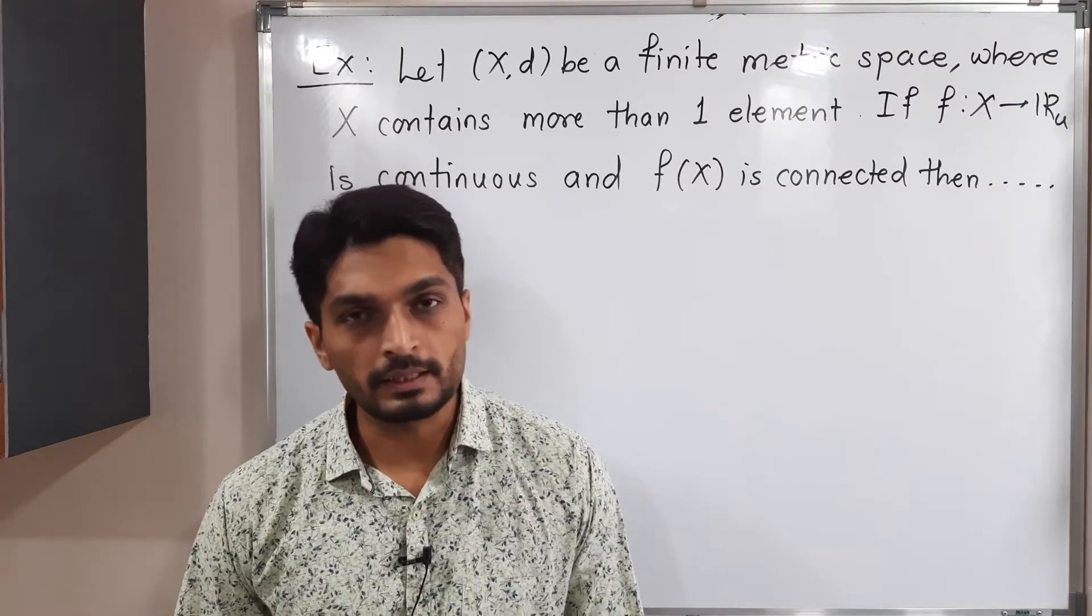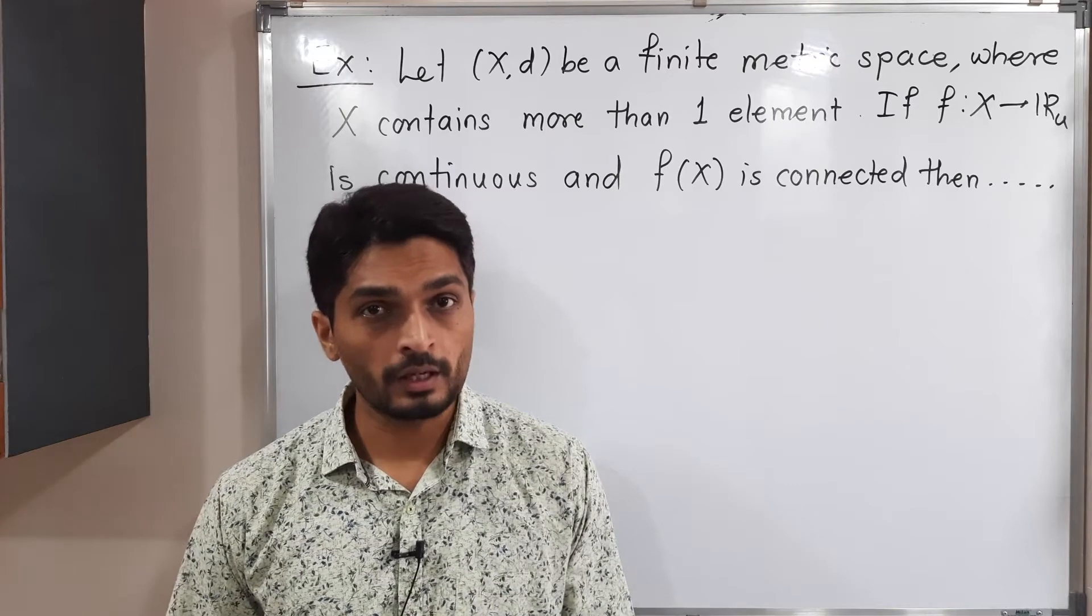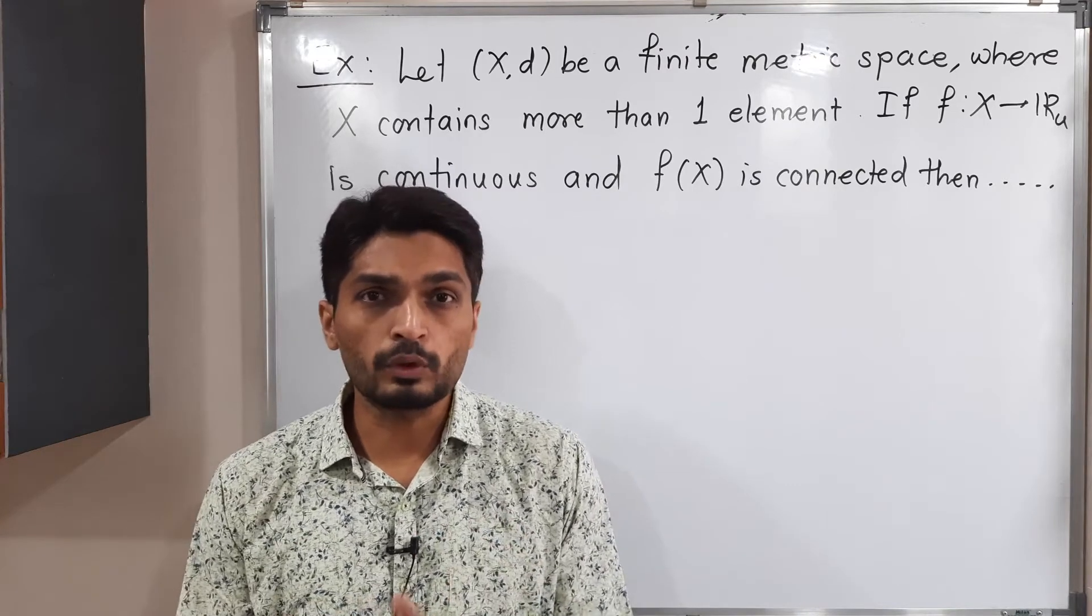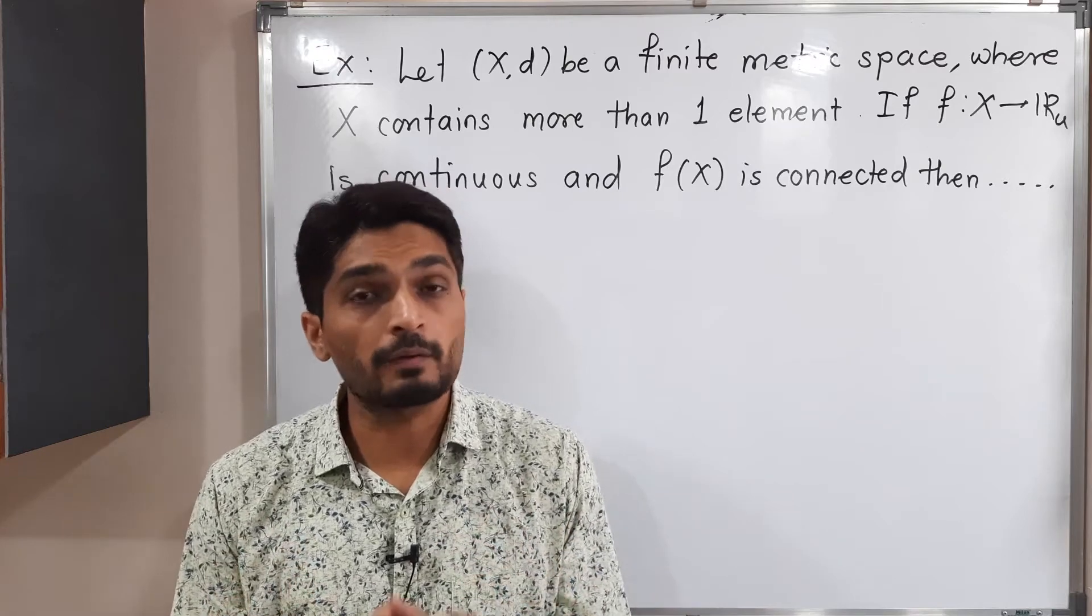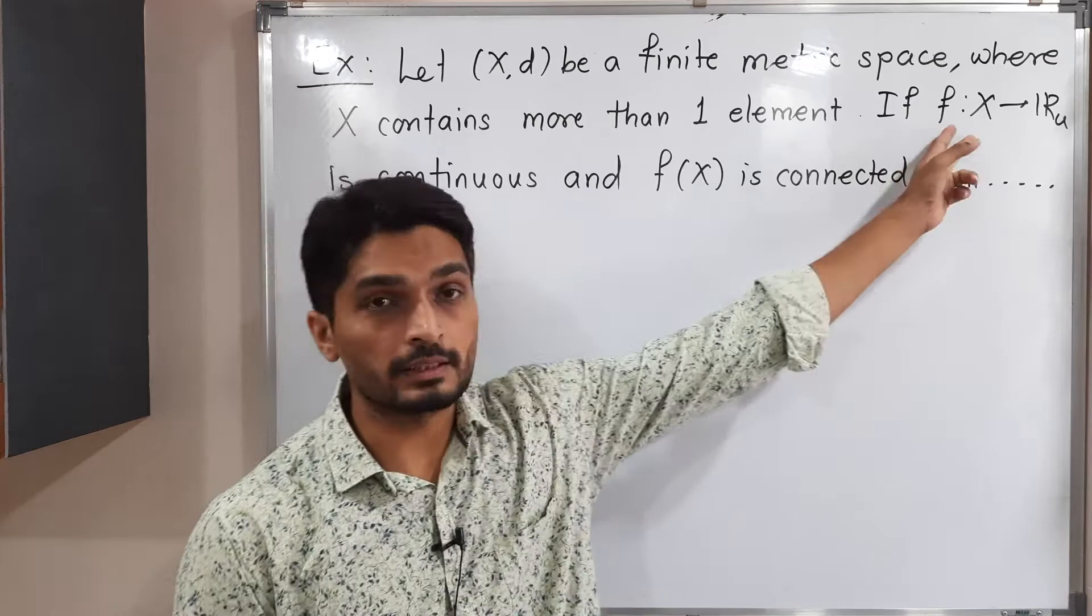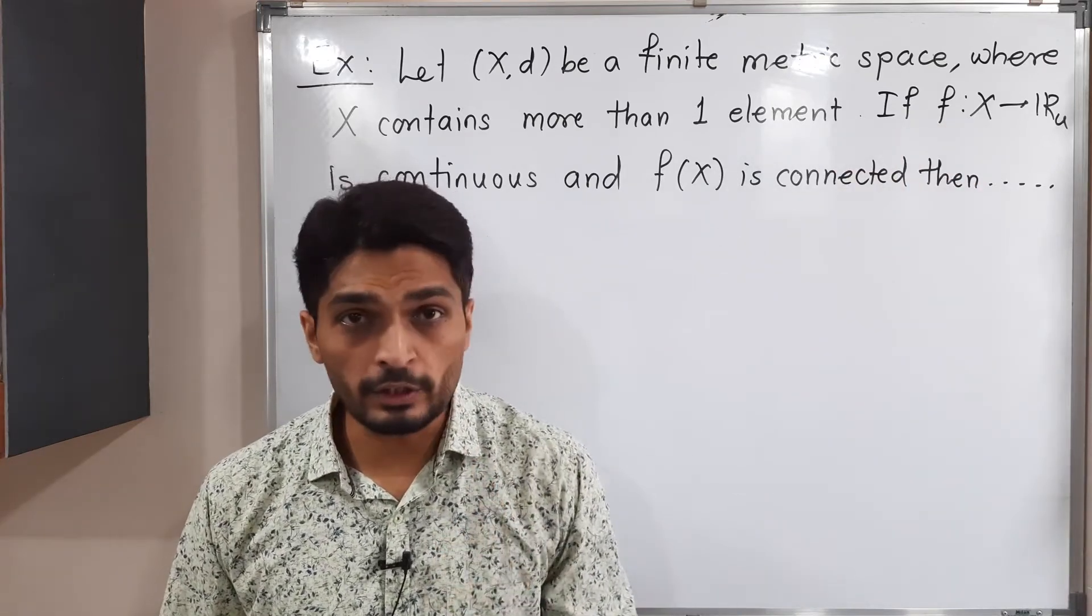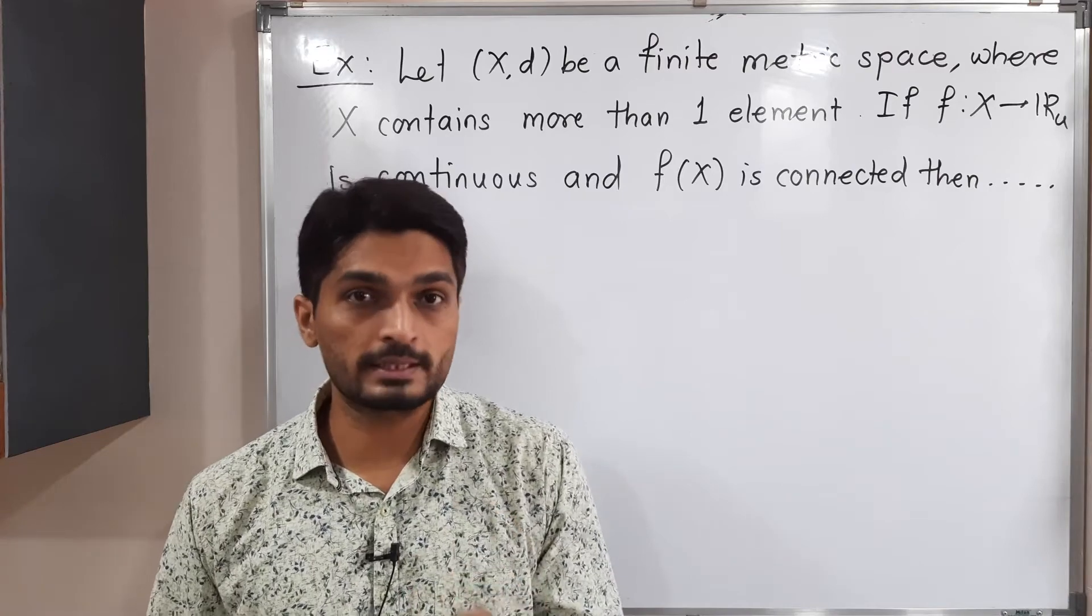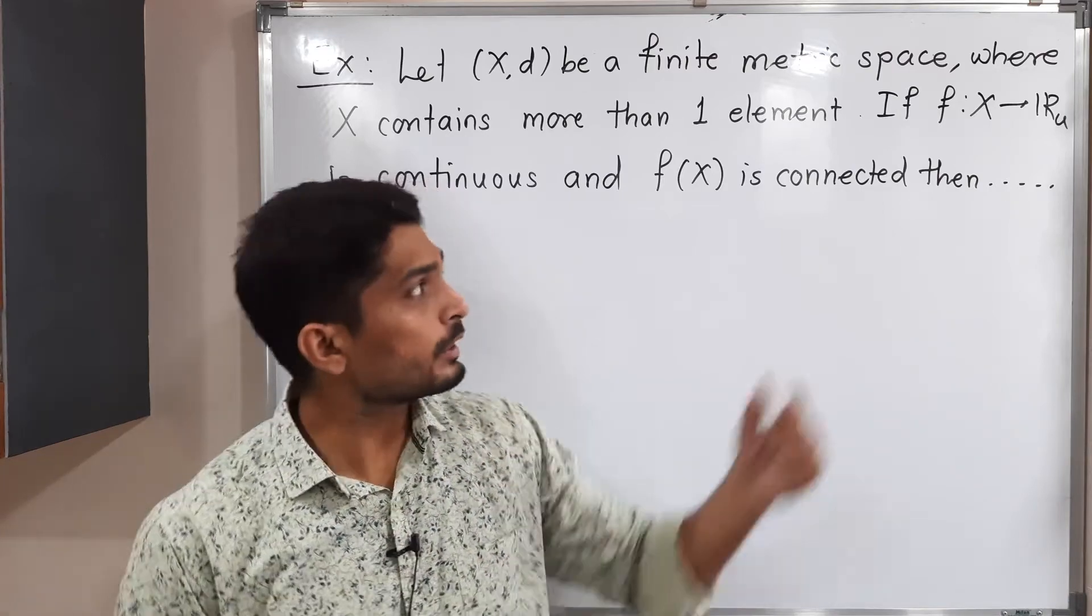Let us discuss this example. In this example we have a finite metric space (X,d), and X contains more than one element. This is a finite metric space. We have a function from X to ℝ with the usual metric. This function is continuous, and f(X), the image of X under f, is connected. We have to conclude about f.